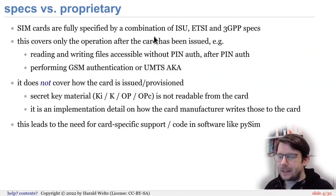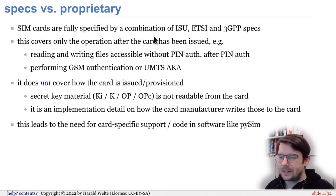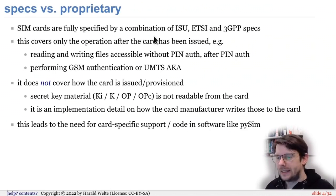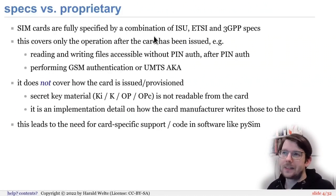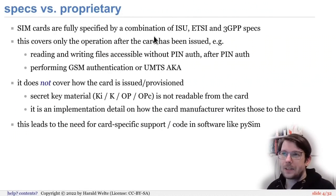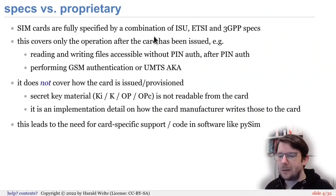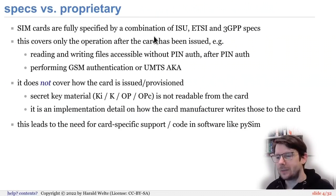SIM card specifications are defined by ISO, ETSI, and 3GPP, with Global Platform covering Java cards. Importantly, these specs only cover what's relevant after the card has been issued — how the phone reads or writes to the card, over-the-air updates, authentication, and so on. Whatever happens before that point — personalization and provisioning — is beyond the specification.